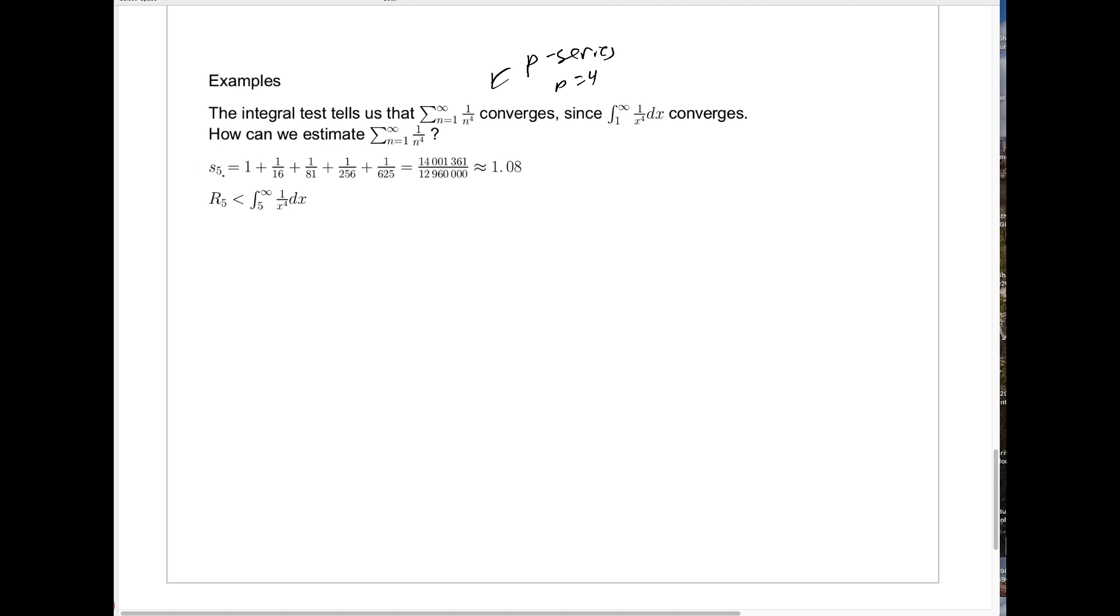How can we estimate the sum? Let's use the fifth partial sum, s sub 5, which is 1 plus a 16th plus an 81st plus 1 256th, that's 4 to the fourth, plus 1 over 625, that's 5 to the fourth. We add those together, and a simple computation shows that that's approximately 1.08.